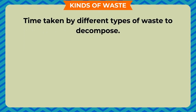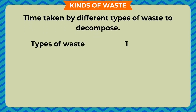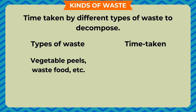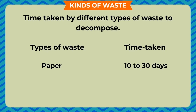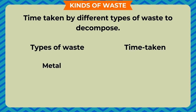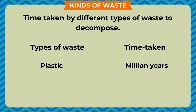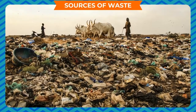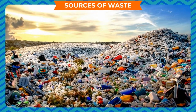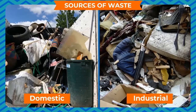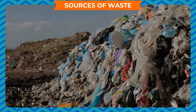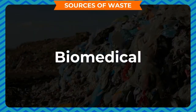Biodegradable wastes include paper, jute, food waste, and fecal matter. Non-biodegradable wastes include plastic, glass, metals, and synthetic fibers. Time taken by different types of waste to decompose: vegetable peels and food waste — 1 to 2 weeks; paper — 10 to 30 days; cotton cloth — 2 to 5 months; wood — 10 to 15 years; metal — 100 to 500 years; plastic — millions of years.